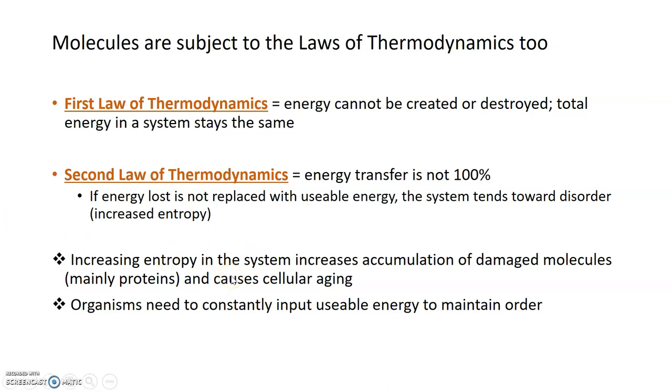Increasing entropy or disorder within a system leads to accumulation of damaged biomolecules, in particular proteins. And that's what causes most of the hallmarks of cellular aging. In order to maintain order, organisms need to constantly be inputting usable energy into the system to offset that increase in entropy that happens with time. By inputting usable energy, they can stave off the accumulation of damaged molecules and stave off aging, at least for a while.